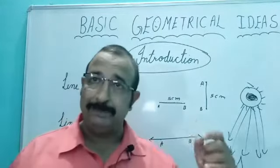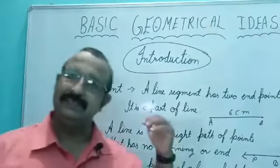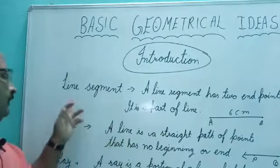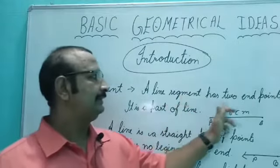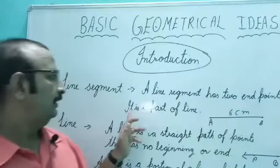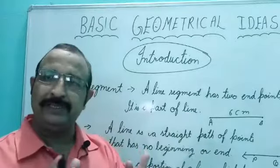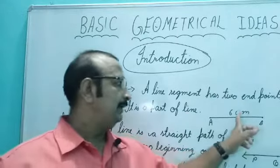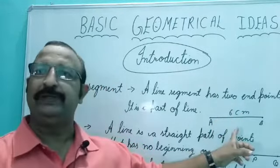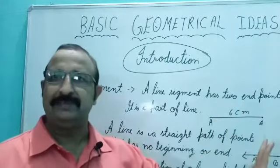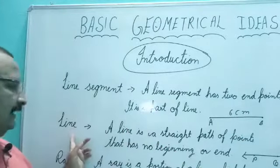These are the definitions. Note down it. Line segment - a line segment has two end points. It is a part of a line. Line segment is a part of line which has two end points A and B. It is six centimeter. You have to draw the example also with the help of pencil. It can be measured either six, five, four, as usual.